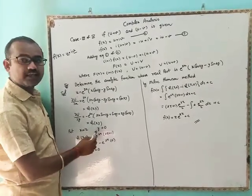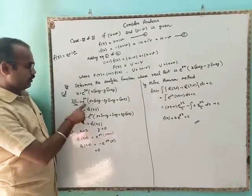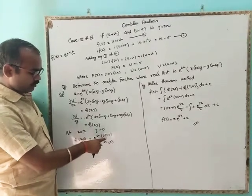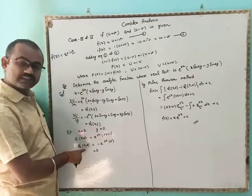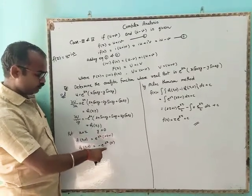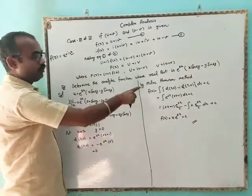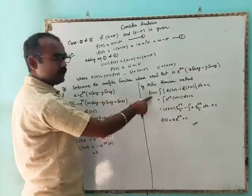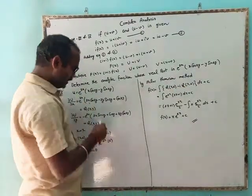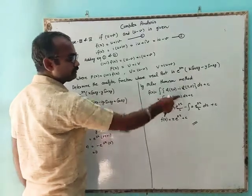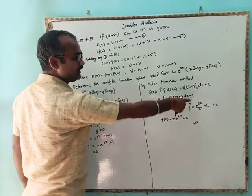Next, put x = z and y = 0 to find φ₁(z, 0) and φ₂(z, 0). Substituting y = 0, the terms with y vanish, giving φ₁(z, 0) = e^(2z)(2z + 1) and φ₂(z, 0) = 0. By the Milne-Thompson method, f(z) = ∫[φ₁(z, 0) − i·φ₂(z, 0)] dz + c = ∫ e^(2z)(2z + 1) dz + c.